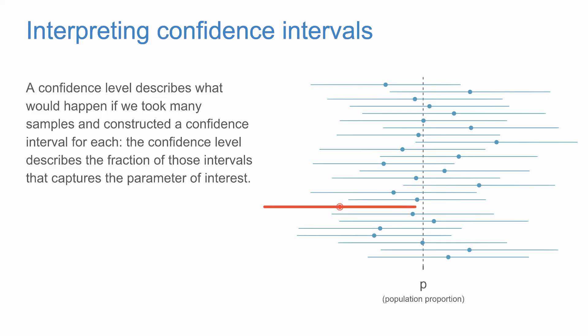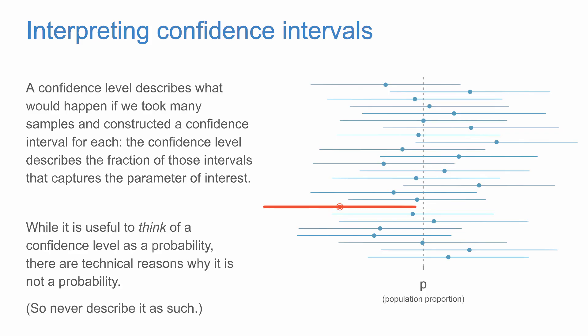So what does 95% confidence or 99% confidence actually mean? A confidence level describes what would actually happen if we took many samples and constructed confidence intervals for each. The confidence level describes the fraction of those intervals that capture the population parameter of interest. While it's useful to think of a confidence level as a probability, there are technical reasons why it is not a probability, so never describe it as such — it'll almost certainly get marked as wrong on a homework, exam, or quiz.